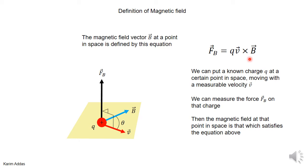So if you want to define the magnetic field, you can put a known charge at a certain point in space and make the charge move with a certain velocity that you can measure. Then you can measure the force on that charge at that point in space, and then the magnetic field would be, at that point, the vector that satisfies this equation.